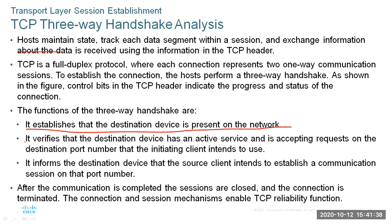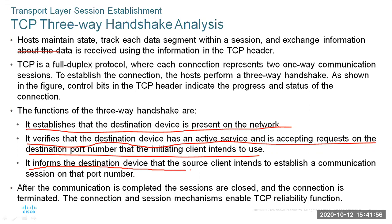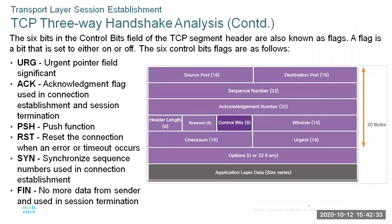The three-way handshake also verifies that the destination device has an active service and is accepting requests on the destination port number the client intends to use. Third, it informs the destination device that the source client intends to establish a communication session on that particular port number. After communication is completed, sessions are closed and the connection is terminated, which enables TCP reliability.